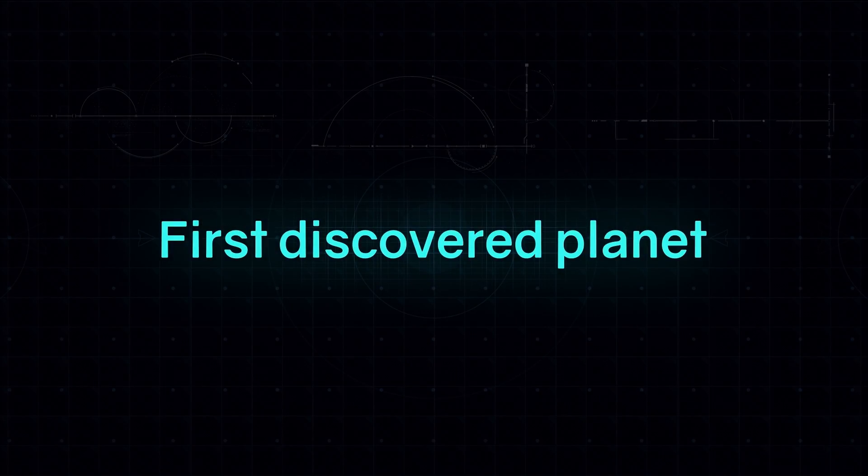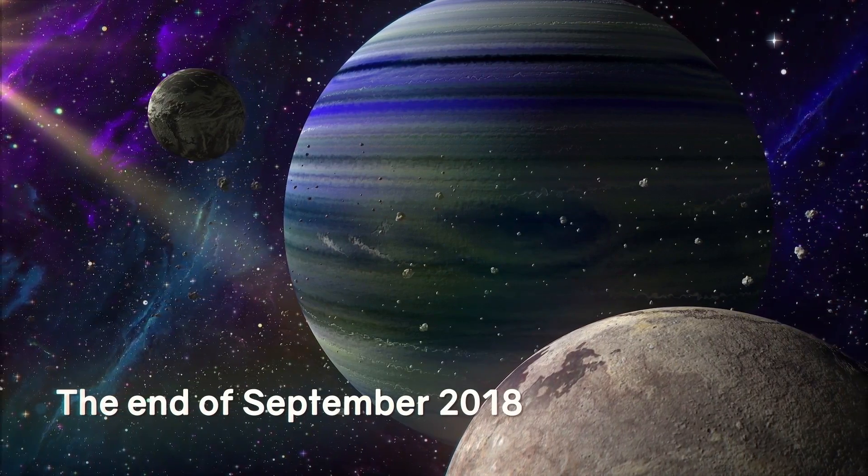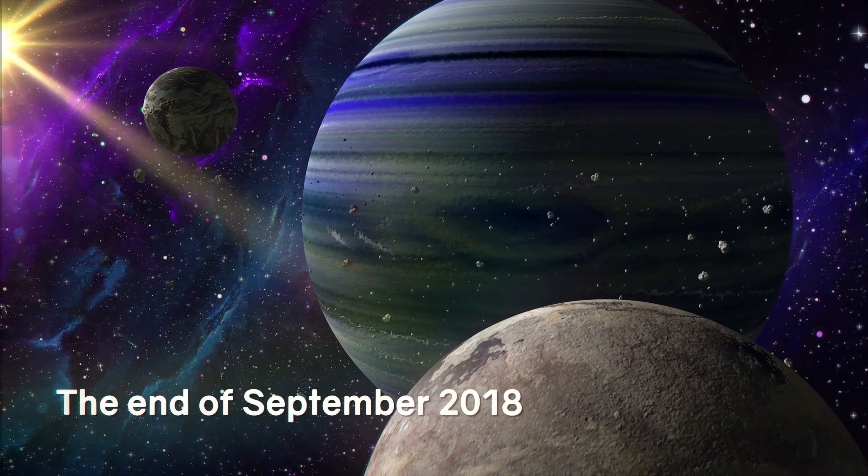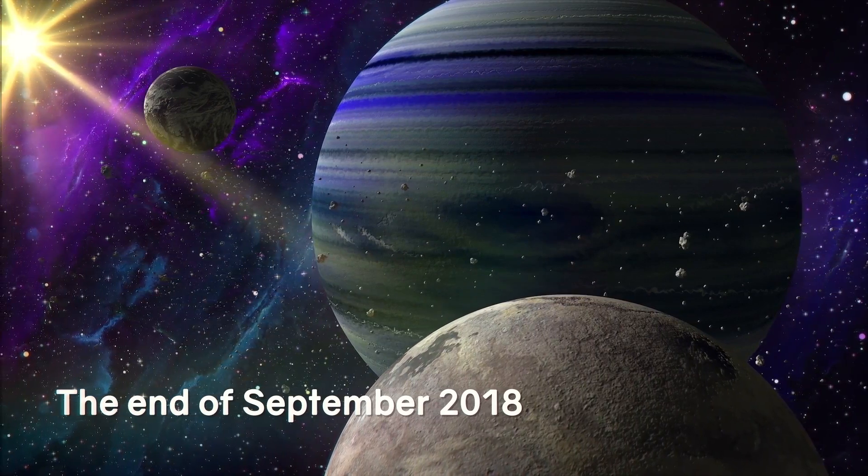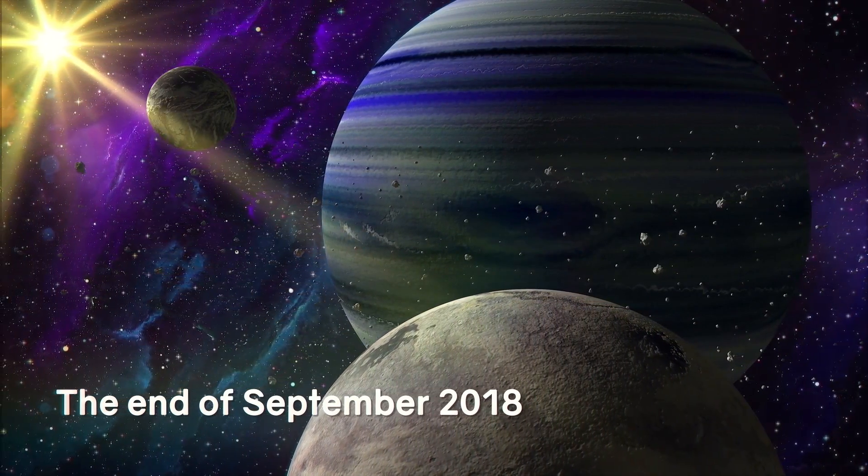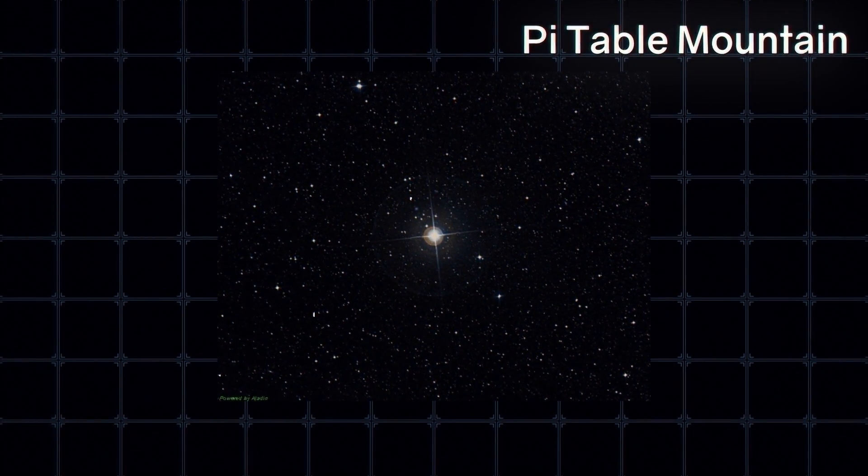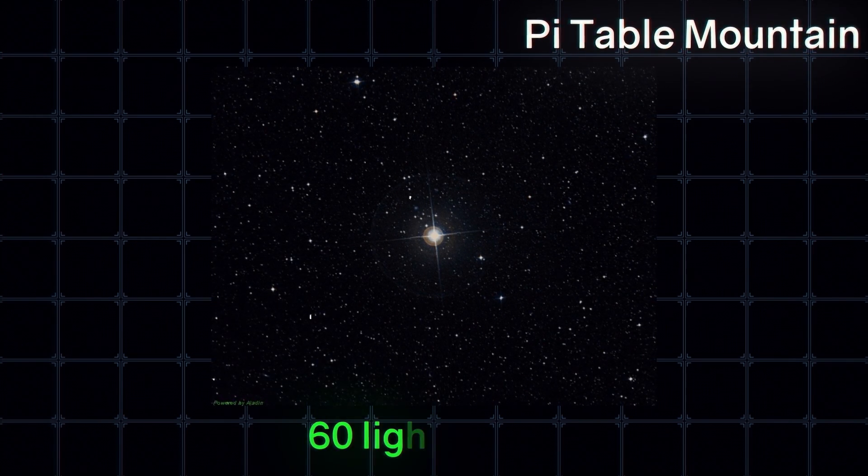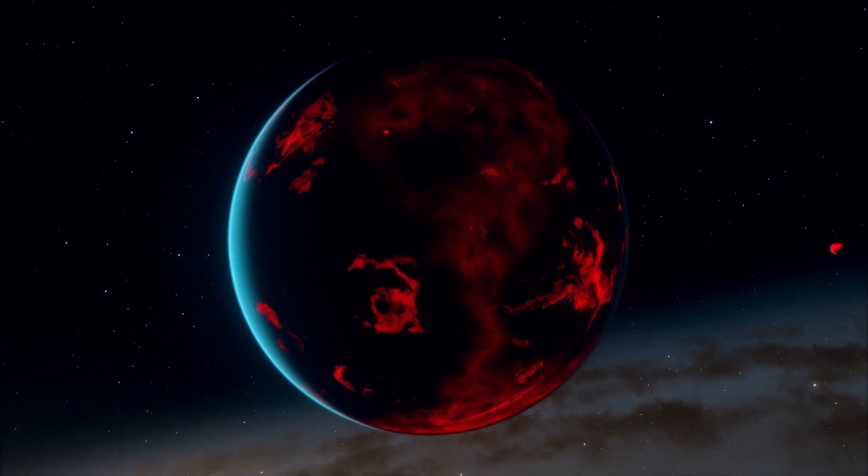First, about the first discovered planet. At the end of September 2018, a group of astronomers, led by Chelsea Huang from the Massachusetts Institute of Technology, announced the first exoplanet discovered by the telescope. The newly discovered exoplanet lies in the bright pi-star system of the Table Mountain, about 60 light-years from Earth. Now, about the most interesting exoplanets found.